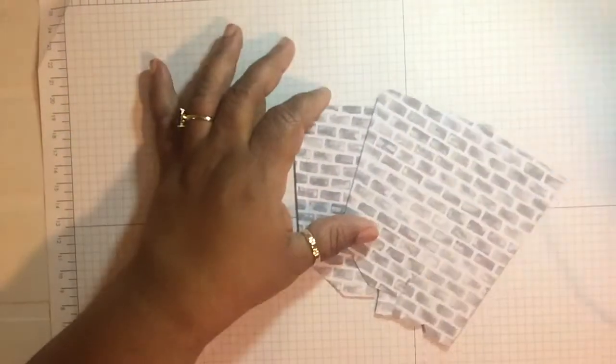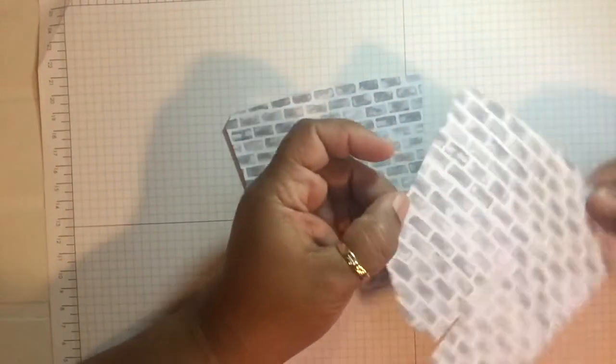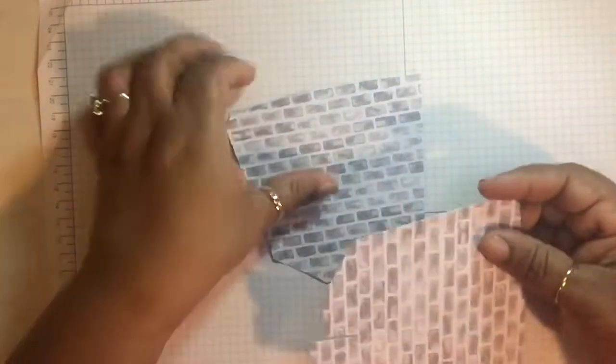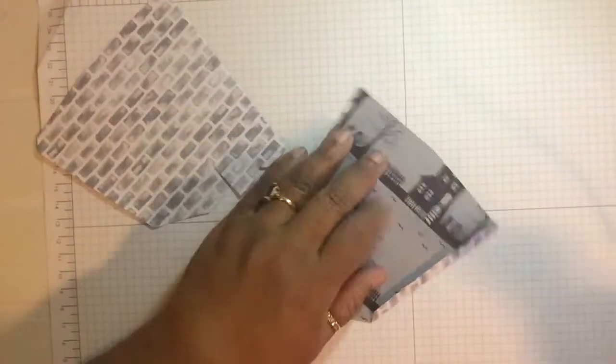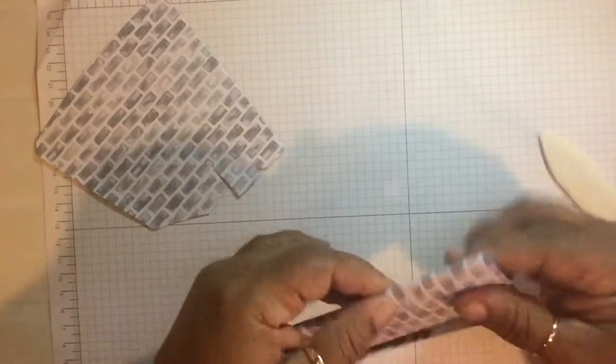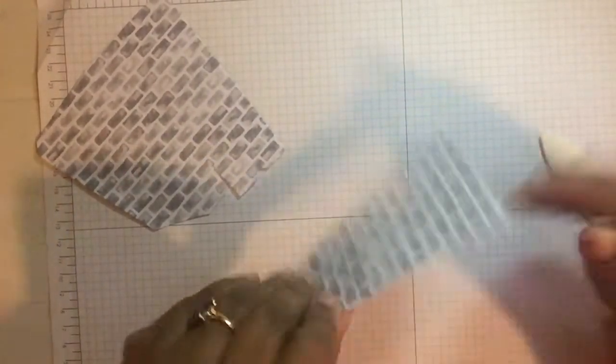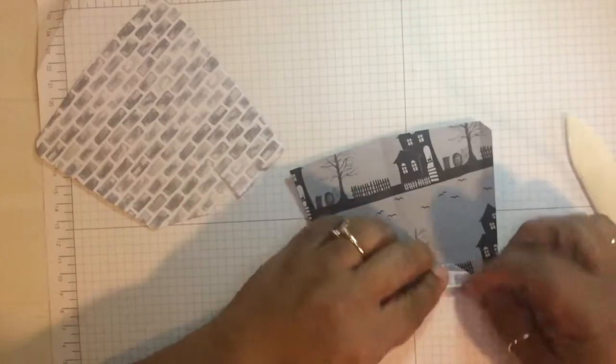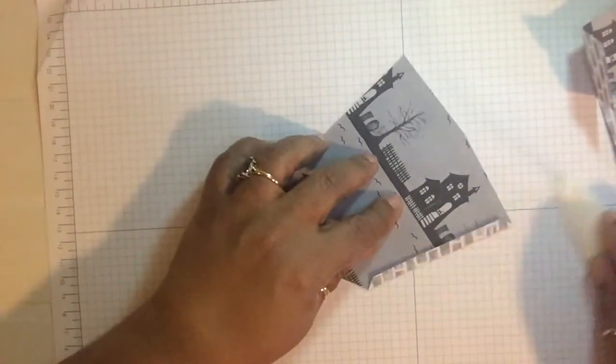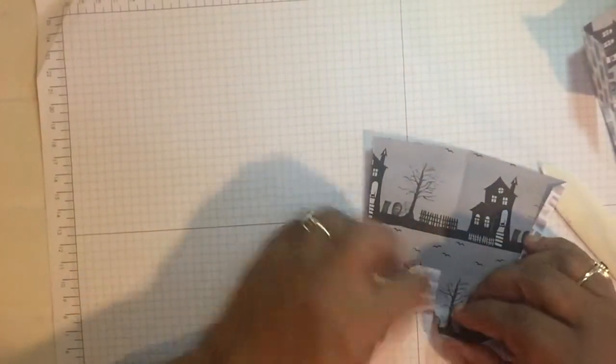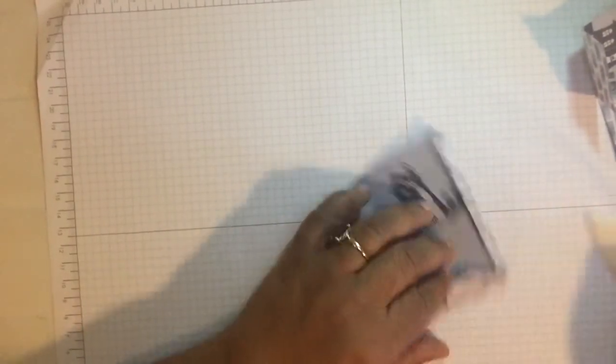Okay, I have both of them cut out and this is what they look like. And you can't really see it on here too good, but it does put score lines on here. And so I'm going to fold it on all the score lines on both pieces. And then you can reinforce it with your bone folder. And we'll do it for both pieces.